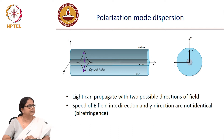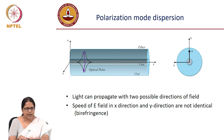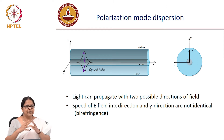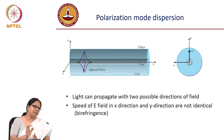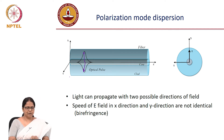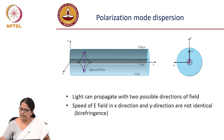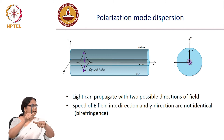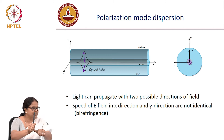Why is a fiber a birefringent medium? We assumed a circularly symmetric core with refractive index n1 and clad with n2. Because of the circular symmetry, the refractive index is n1 everywhere, so it should not matter whether you propagate with one polarization or another — all polarizations should see the same refractive index.